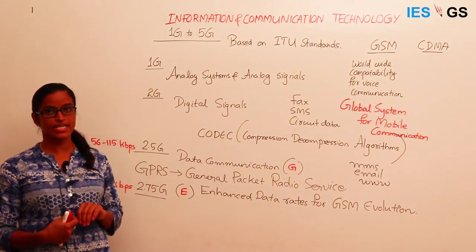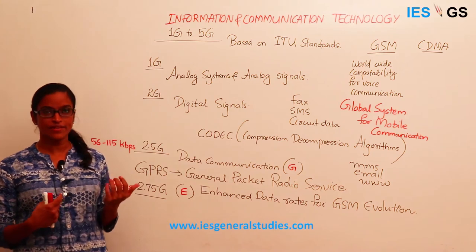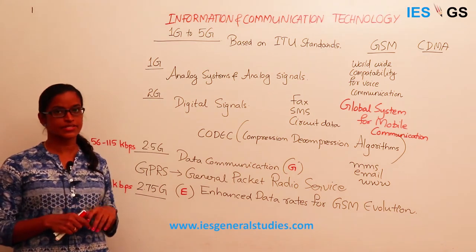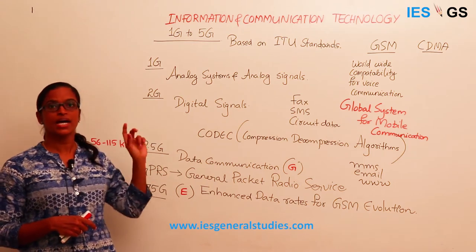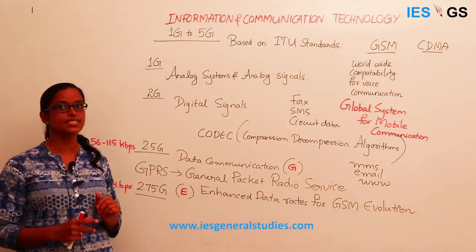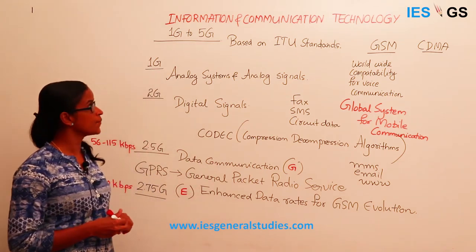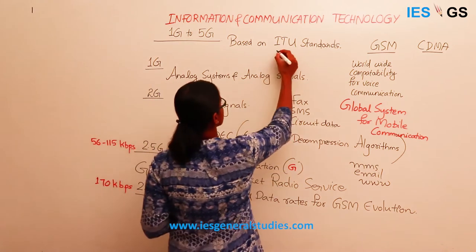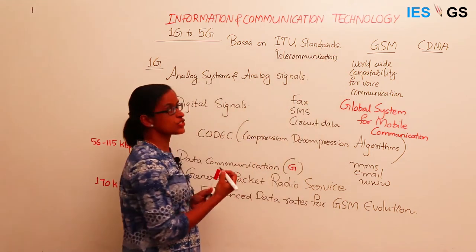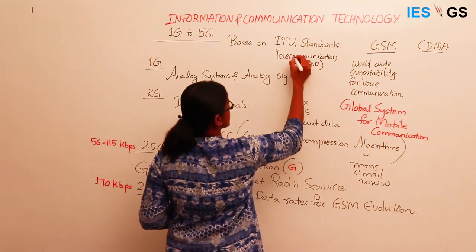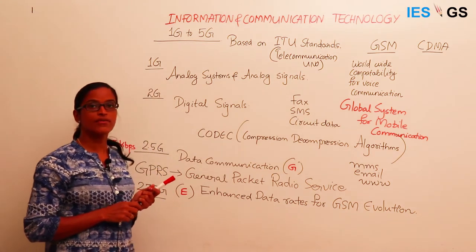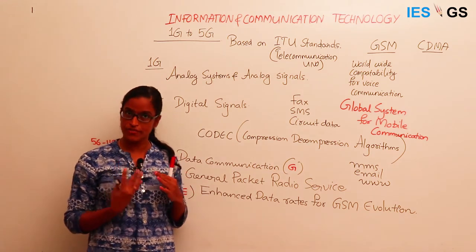Cellular technology has evolved through years, and different versions are called different generations, starting with 1G and now with research going on for 5G. These generations are differentiated based on standards given by ITU — the International Telecommunication Union — which is a specialized agency of the United Nations organization that standardizes cellular services and technologies, coming up with different standards for different generations.